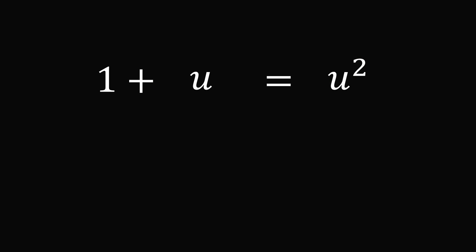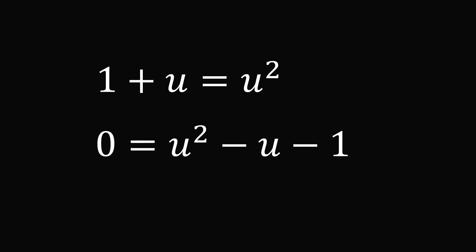Now we have a quadratic equation. This is a standard equation we can solve. Subtract u and subtract 1 from both sides to put the quadratic in standard form: 0 = u^2 - u - 1.